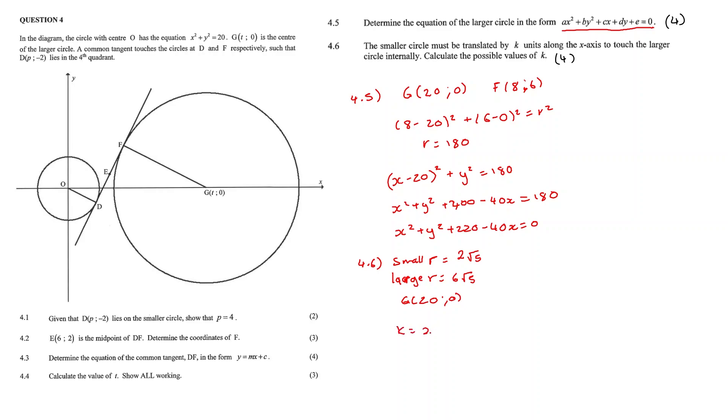our k value must either be 20 minus the difference in our radii, so 6 root 5 minus 2 root 5, or k is equal to 20 plus the difference in radii. And when we calculate this, we get k to be equal to 11.06 units or 28.94 units. And that's all for this video. Thank you.